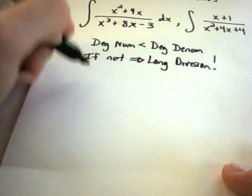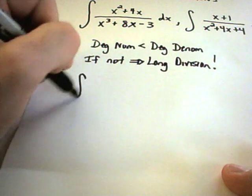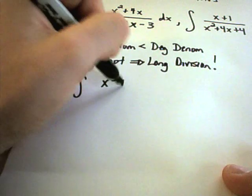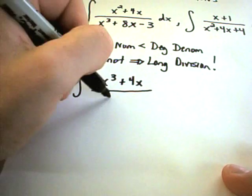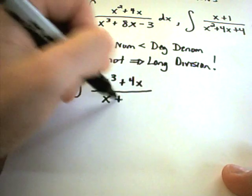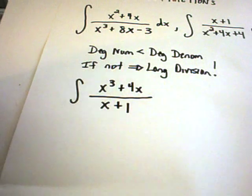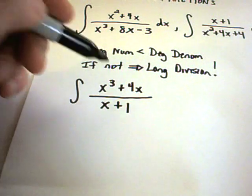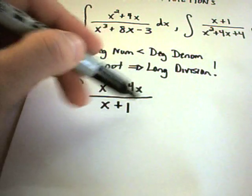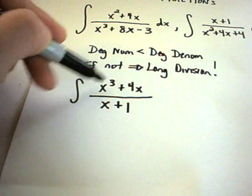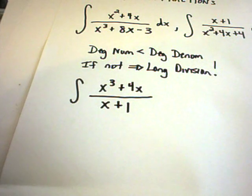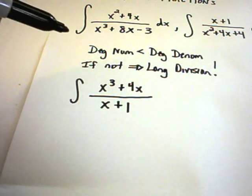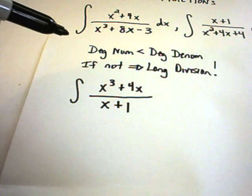For example, if you're integrating x cubed plus 4x over x plus 1, the first thing you'd have to do is long division — divide x cubed plus 4x by x plus 1 to turn it into a better form.